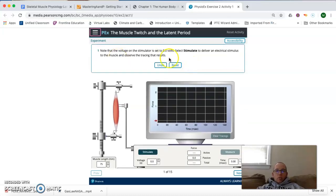And so, the voltage on the stimulator right now is set to zero volts. If it's set to zero volts, that means, essentially, there's no stimulation happening. And so, we're going to click stimulate. And as you might predict, there's no actual force generated by that muscle because it hasn't received a stimulus that is strong enough.